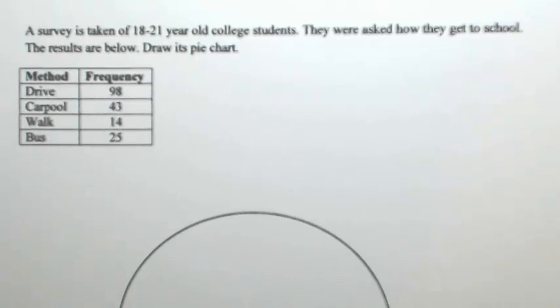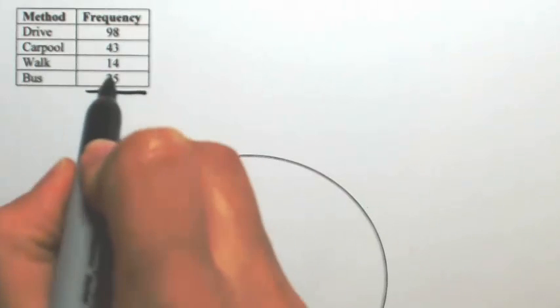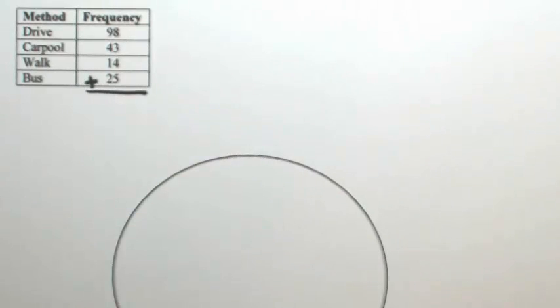So if I want to figure out how we're going to fit this information into a pie chart, the first thing we need to do is figure out how much of the pie is each method going to take. So I think we should probably add all of this up so we can figure out how much there is all together.